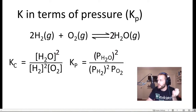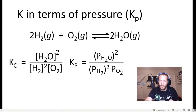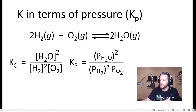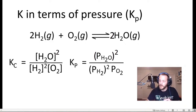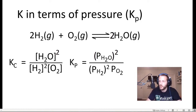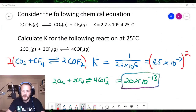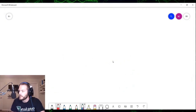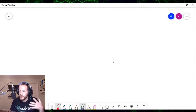Only instead of using concentrations, we're using partial pressures. Now, it turns out that you can actually derive a relationship between the equilibrium constant with respect to concentration and the equilibrium constant with respect to pressure. And so that's what we're going to do right about now. This is going to be a pretty lengthy derivation — I hope nobody tunes out or clicks away.